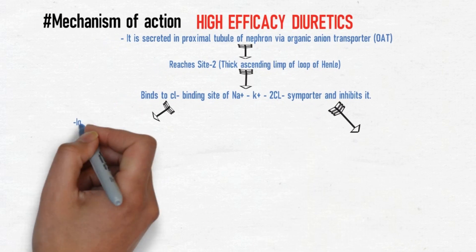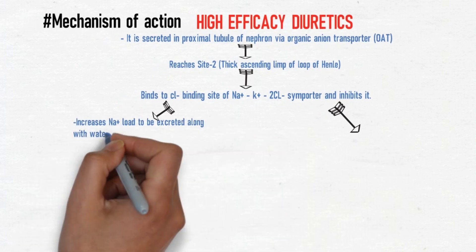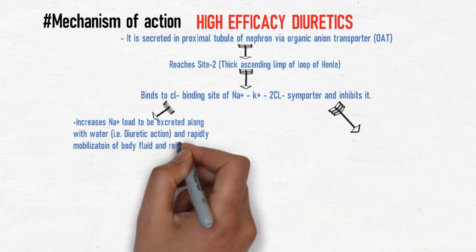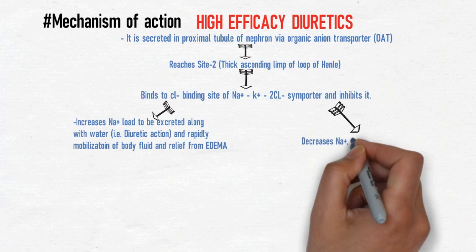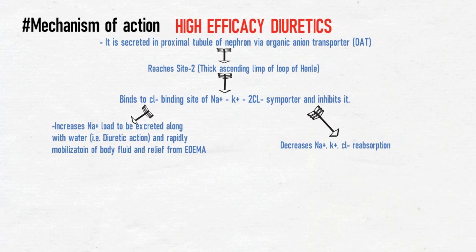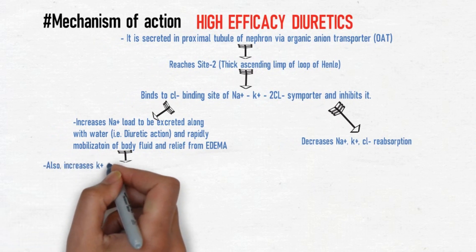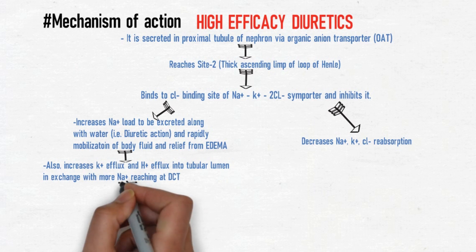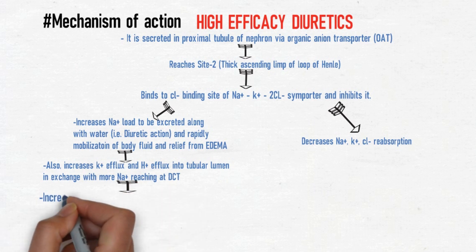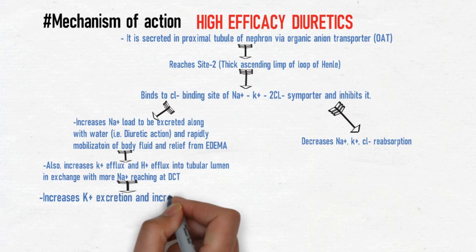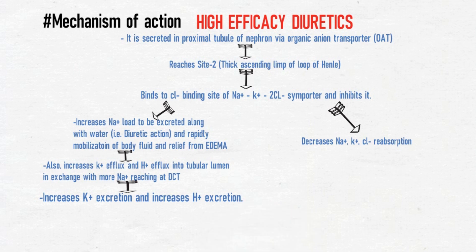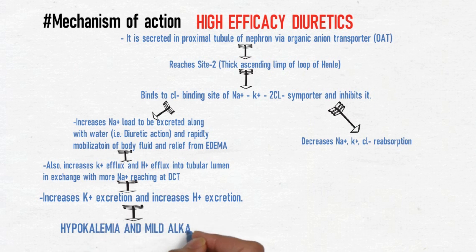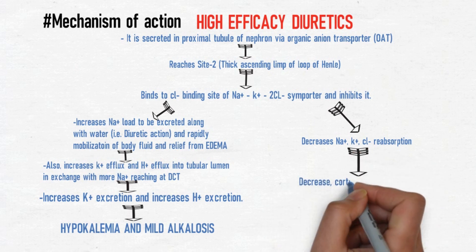This inhibition results in increased sodium load to be excreted along with water, producing the diuretic action and rapid mobilization of body fluid, relieving edema. It also decreases sodium-potassium-chloride reabsorption, which increases potassium efflux and hydrogen efflux into the tubular lumen. More sodium reaching the distal convoluted tubule results in increased potassium and hydrogen excretion, finally causing hypokalemia and mild alkalosis.